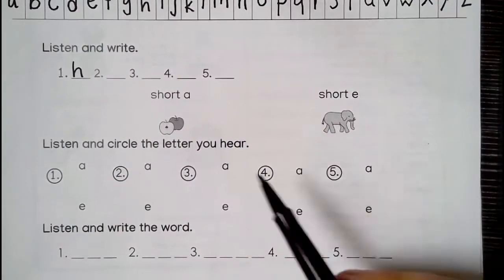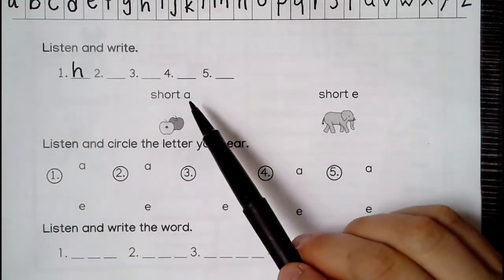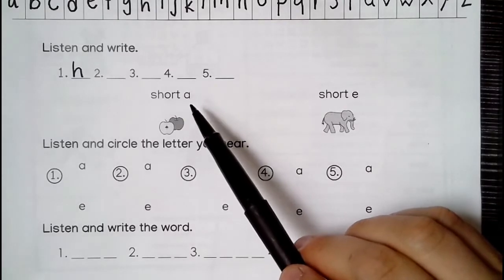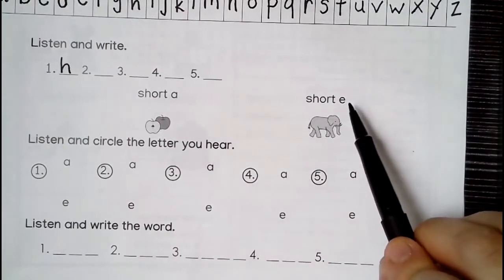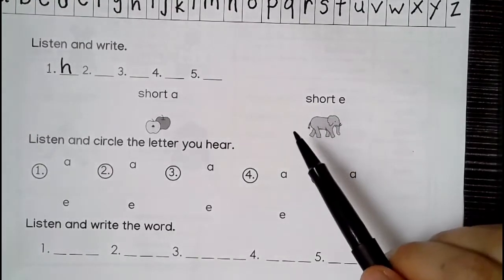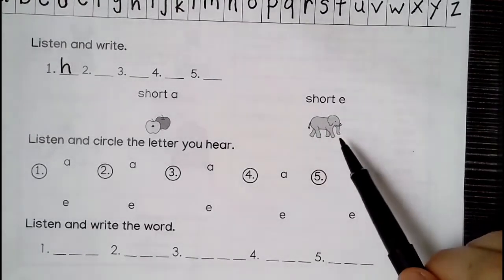Okay. Short A. The sound is A. A. Like apple. And short E. The sound is E. E. Like elephant.